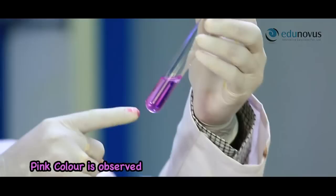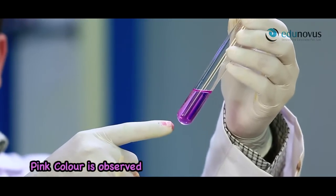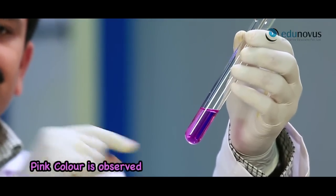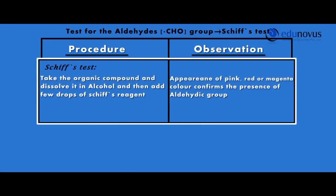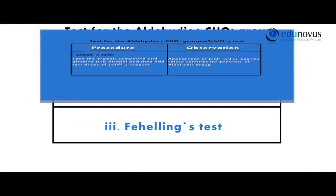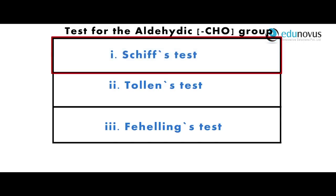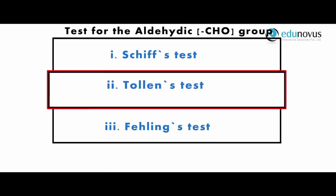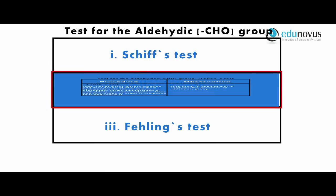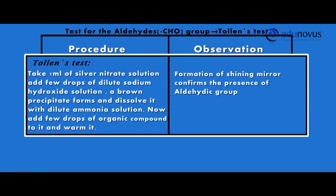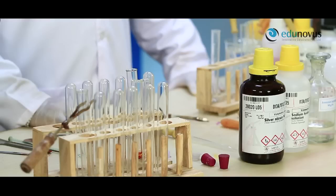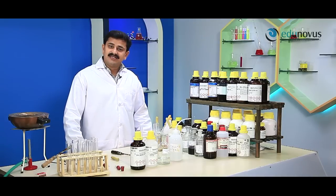Here you can clearly see the appearance of pink color, which confirms the presence of the aldehyde group. It can also be confirmed by using Tollens' test, or the silver mirror test.